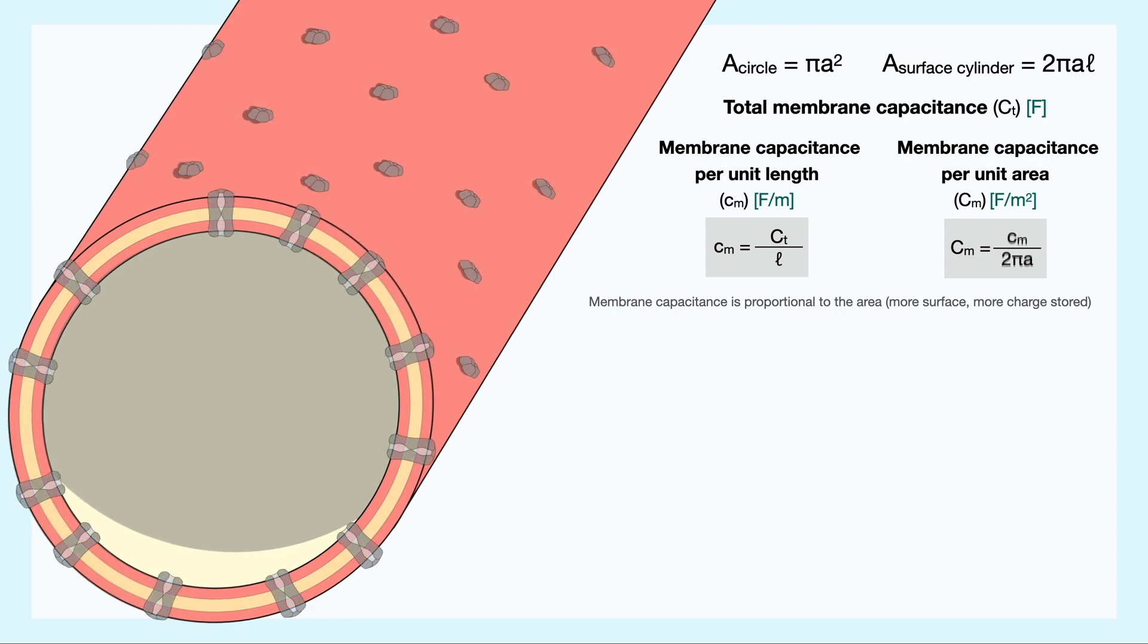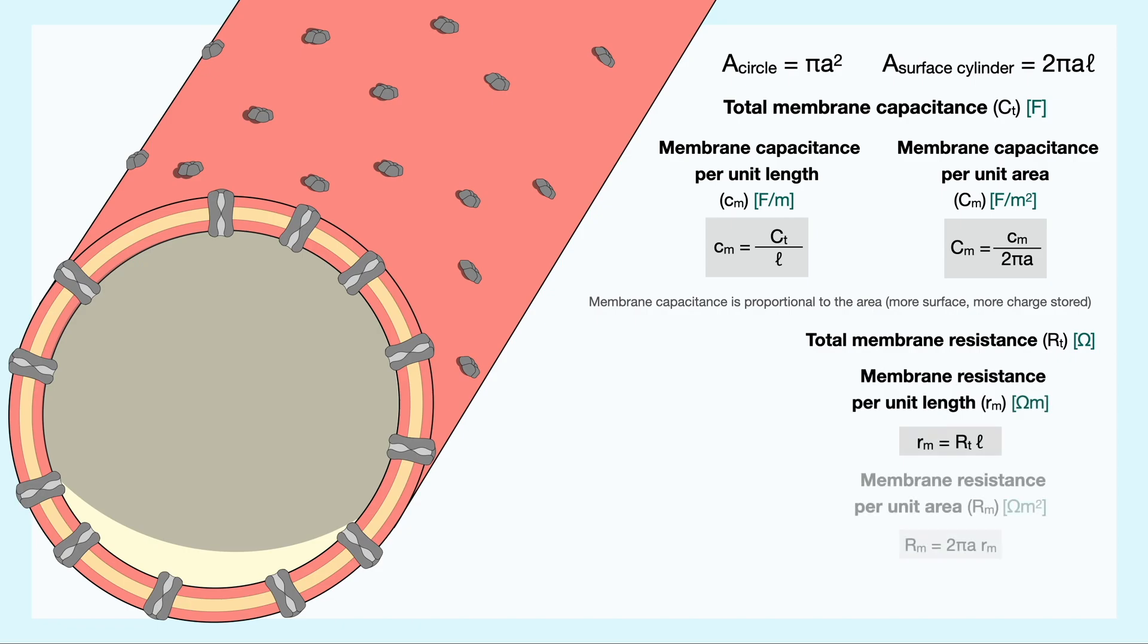In addition to the capacitance, remember that the membrane has channels embedded in it that allows ions to flow in and out of the cell. As such, we can establish the same quantities for the total resistance, resistance per unit length, and resistance per unit area. Here, however, it is a bit tricky, because it seems like the areas are not at the correct places.